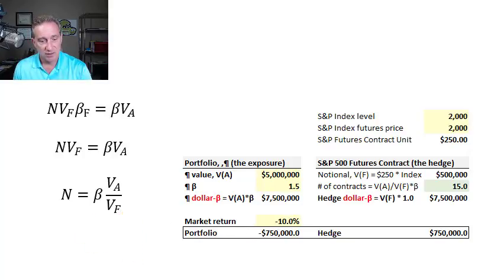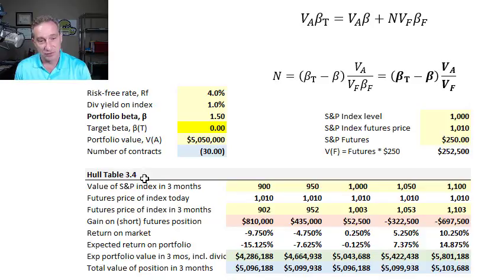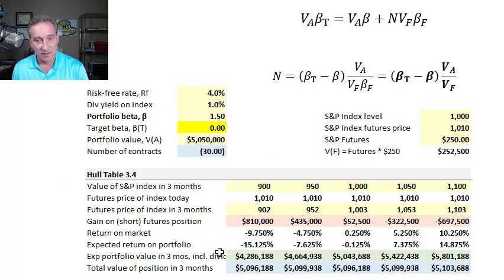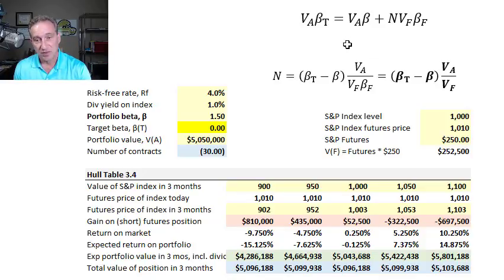If you're interested in understanding John Hull's Table 3.4, it's the same idea. Starting with this formula, dollar beta works for us because it's additive and subtractive. We have the initial underlying portfolio — its dollar beta — and if we add some number of futures contracts, or short them, we're adding or subtracting dollar beta in the hedge.